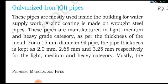For a 15 mm diameter GI pipe, the pipe thickness is kept as 2.0 mm, 2.65 mm, and 3.25 mm respectively for the light, medium, and heavy category. So if the metal thickness is 2 mm, the grade is light; 2.65 mm is medium grade; and 3.25 mm is heavy grade category.